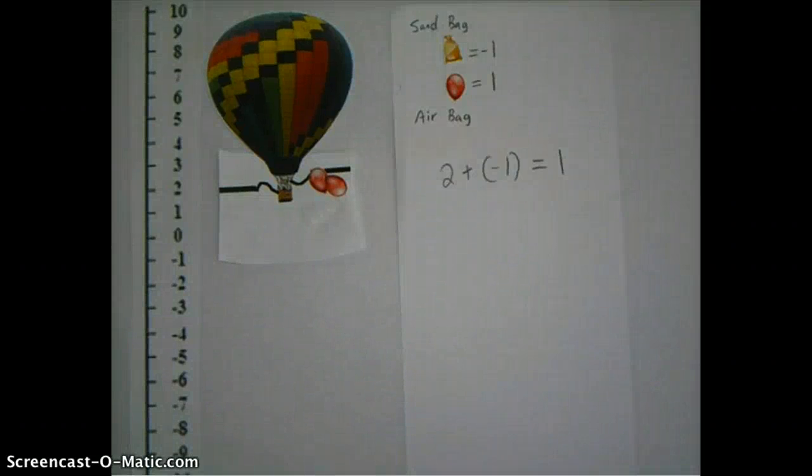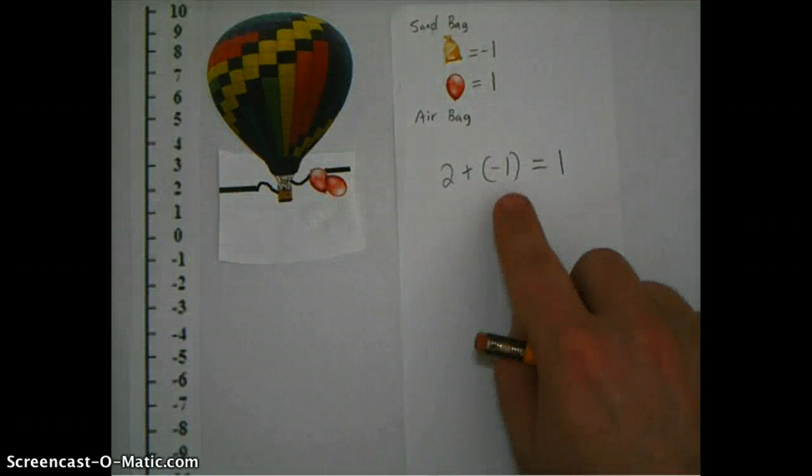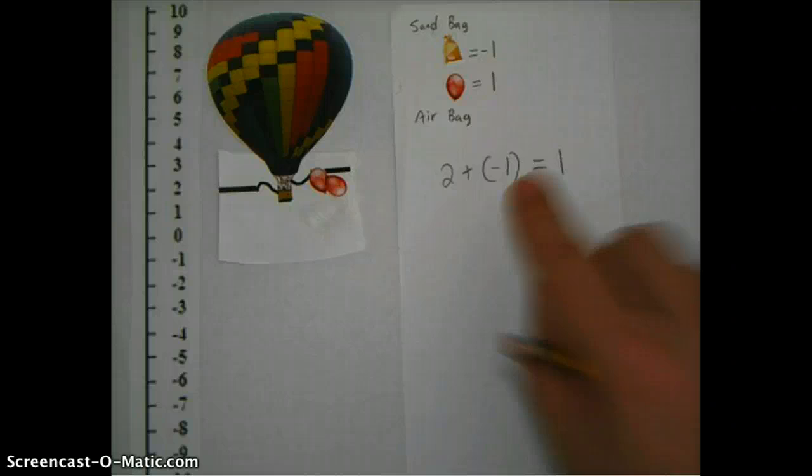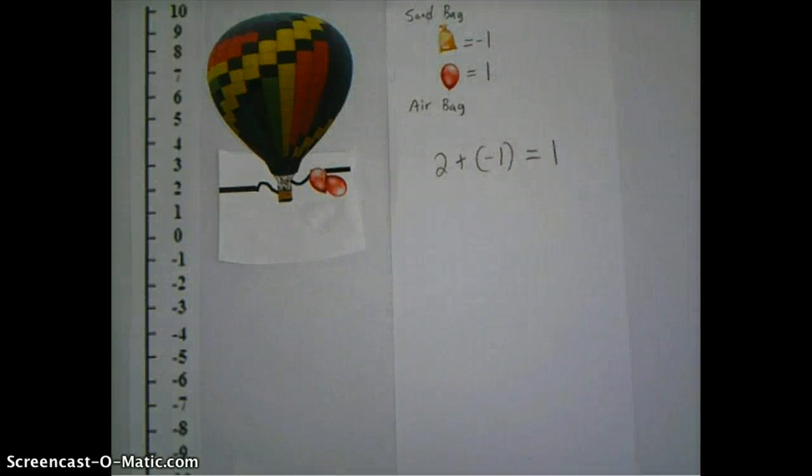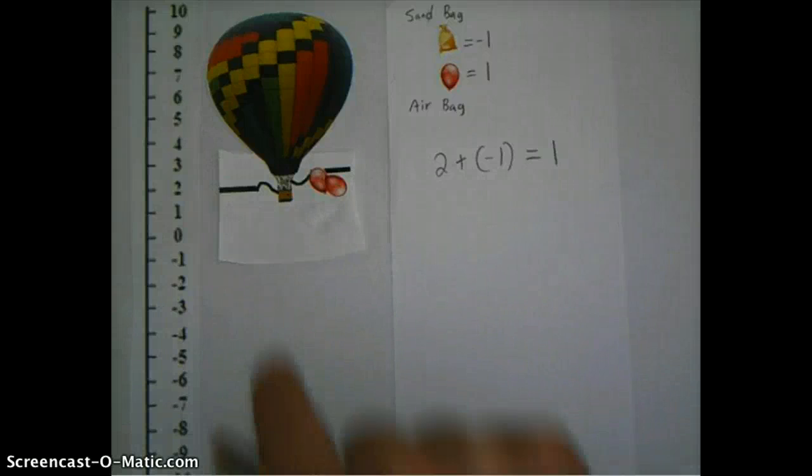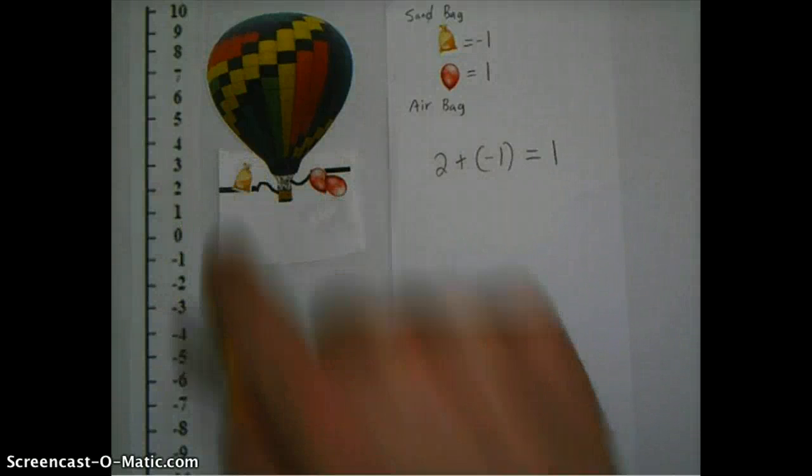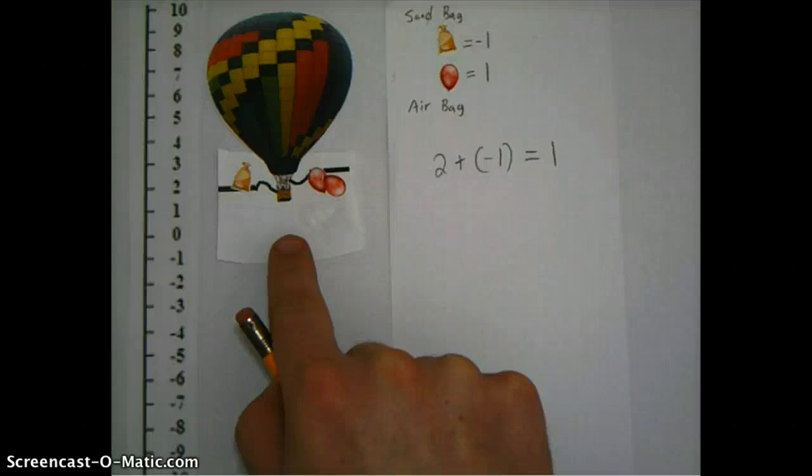So now that it's at two, if I'm adding minus one, what does that mean? Well, I'm adding one of these sandbags to my model, and I'm going to put a sandbag on top of here, and that's going to pull it down one.